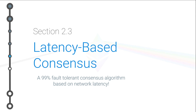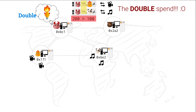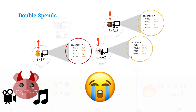Welcome to section 2.3, Latency-Based Consensus, where we're going to talk about the 99% fault-tolerant consensus algorithm, which is based around synchrony assumptions that we learned about in the previous section. We just talked about the double spend problem, where Mallory was able to buy both a movie and a song when Mallory did not have the funds to do so.